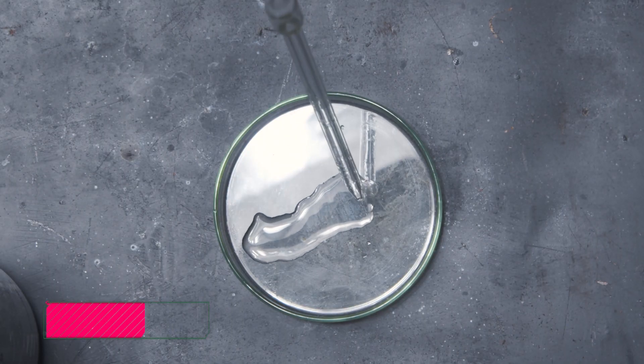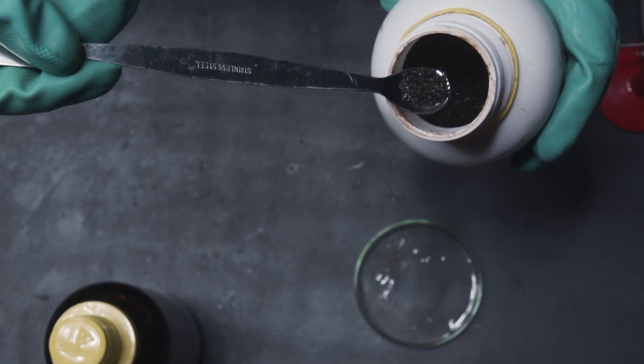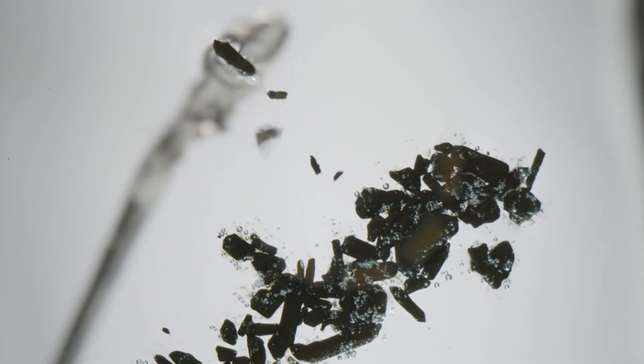Take a pipette of concentrated sulfuric acid and put it in a petri dish. Then you want to mix in a small amount of potassium permanganate to it.